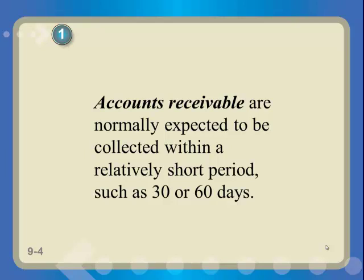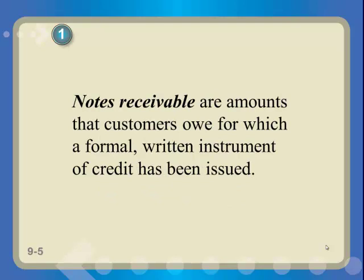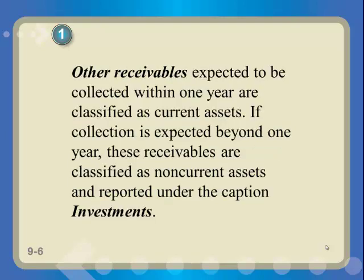Accounts receivable is a current asset due within a year. A note receivable is a long-term or non-current asset — it could be due five years from now. It's like a loan, basically. This could be for someone who placed a really big order and didn't pay it, so they set up a payment plan — say $200 a month for the next two years. That would be a note receivable, similar to financing a car. Accounts receivable is more like revolving credit that the customer pays off pretty quickly and takes out several times during the year.